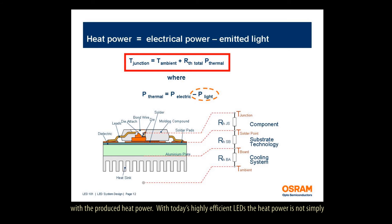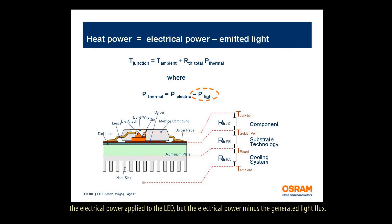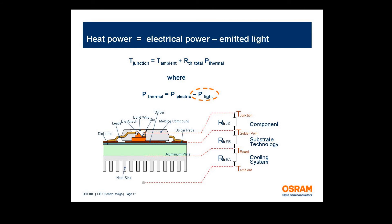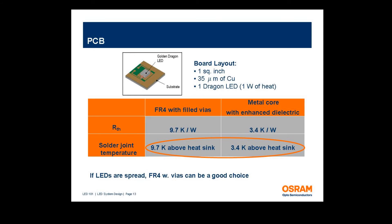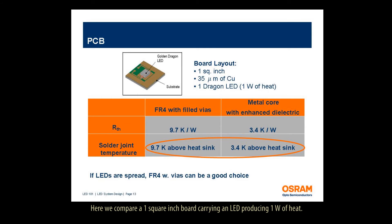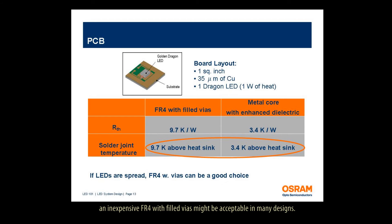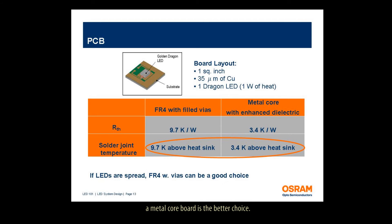With today's highly efficient LEDs, the heat power is not simply the electrical power applied to the LED, but the electrical power minus the generated light flux. There are various choices of PCB materials which differ in their thermal performance and price. Here we compare a one square inch board carrying an LED producing one watt of heat. Though the thermal resistance of the metal core board is lower, the 10 degrees Celsius temperature increase for an inexpensive FR4 with filled vias might be acceptable in many designs. For lamp applications where LEDs are placed close together and a lifetime of 50,000 hours or more is expected, a metal core board is the better choice.